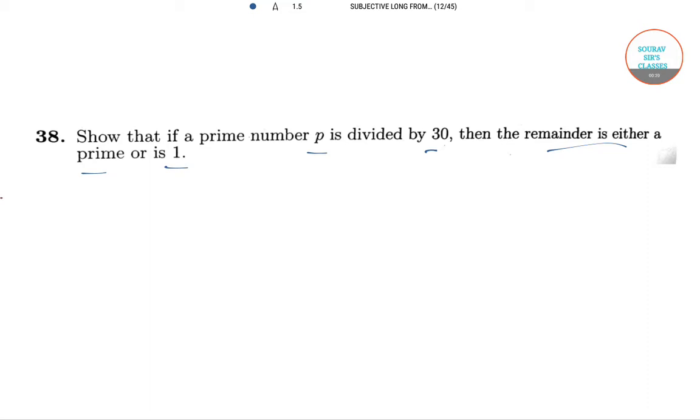Let P is our prime number, which equals 2 into 3 into 5m plus R. 2 into 3 into 5, since 30 can be written as 2 into 3 into 5.